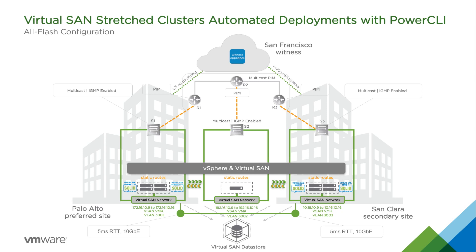Once all of those functions have been successfully performed, we're left to simply enable the cluster with a few clicks directly from the UI. Enabling stretch cluster is not yet available in the latest version of PowerCLI. Once the cluster is fully configured and ready, you'll need to add the HA and DRS recommended settings before you proceed with the creation and deployment of virtual machines and their networks.